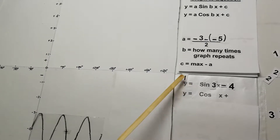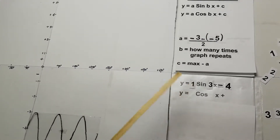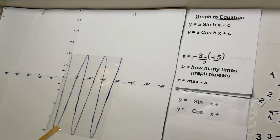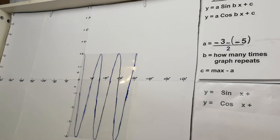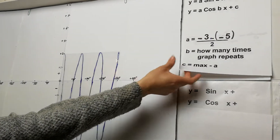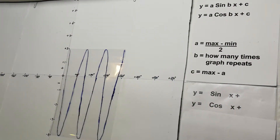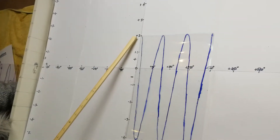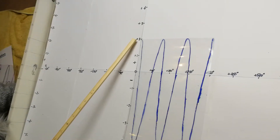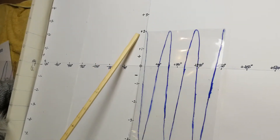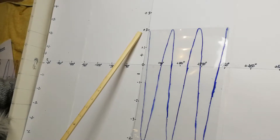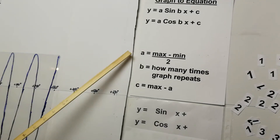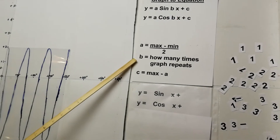On to the next graph. This time we have to decide what type of graph it is. This one starts at the top — it doesn't start in the center — which makes it a cosine graph. So we're going to be working with y = a·cos(bx) + c, and we need to find a, b, and c.